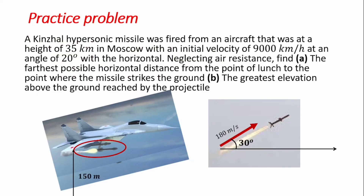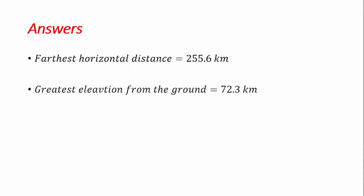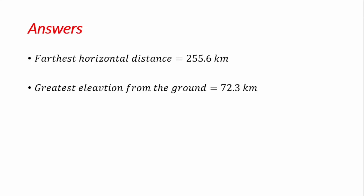As a practice problem, consider a Kinzhal hypersonic missile fired from an aircraft at a height of 35 kilometers in Moscow, with an initial velocity of 9,000 km/h at an angle of 20° with the horizontal. Neglecting air resistance, find the farthest horizontal distance from the launch point to where the missile strikes the ground, and the greatest elevation above the ground reached by the projectile. The answers are: farthest horizontal distance = 255.6 km, and greatest elevation = 72.3 km.